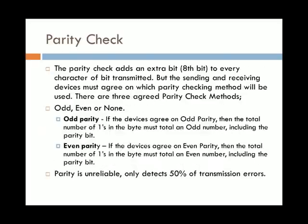The idea of a parity bit check is that it adds an extra bit or an eighth bit to every character transmitted. The sending and receiving devices must agree on which parity checking method they will be using prior to transmission. There are three agreed parity check methods: odd, even, or none. In fact, none is not really a parity check method because it doesn't actually check for errors, so we'll focus just on odd and even.